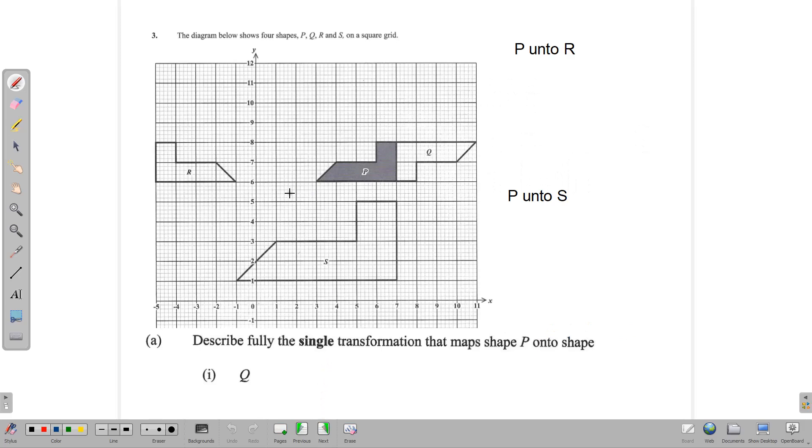Question 3: The diagram below shows four shapes P, Q, R, and S. It's a transformation question, and our aim is to describe fully the single transformation that maps P onto these other shapes.